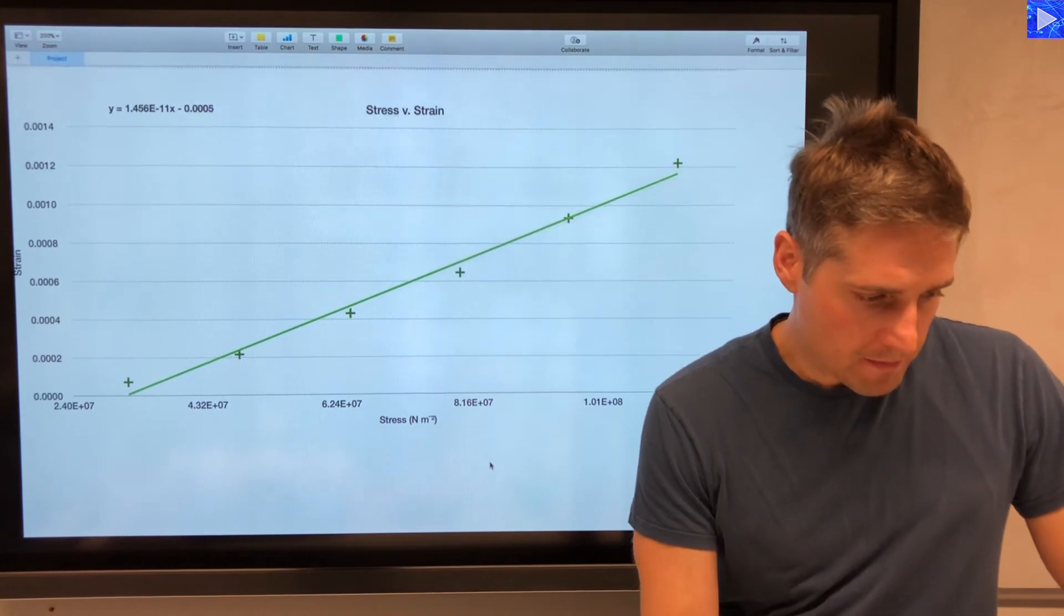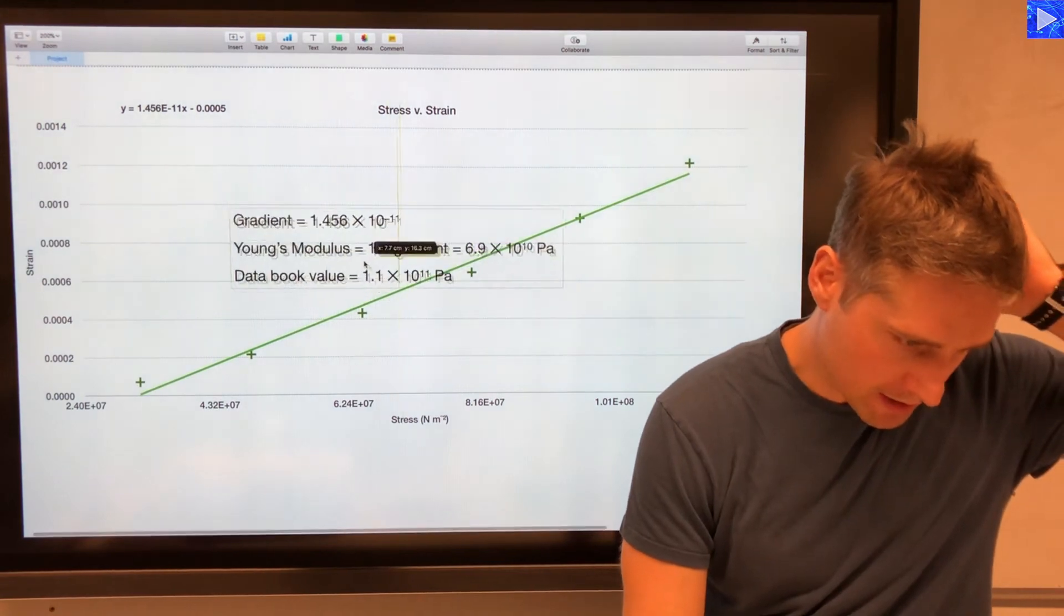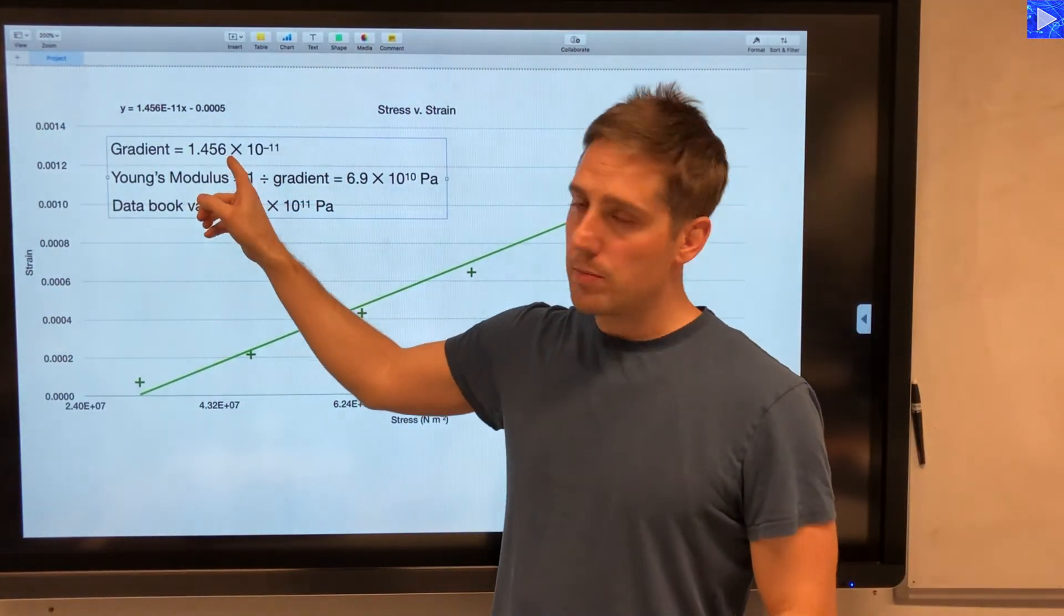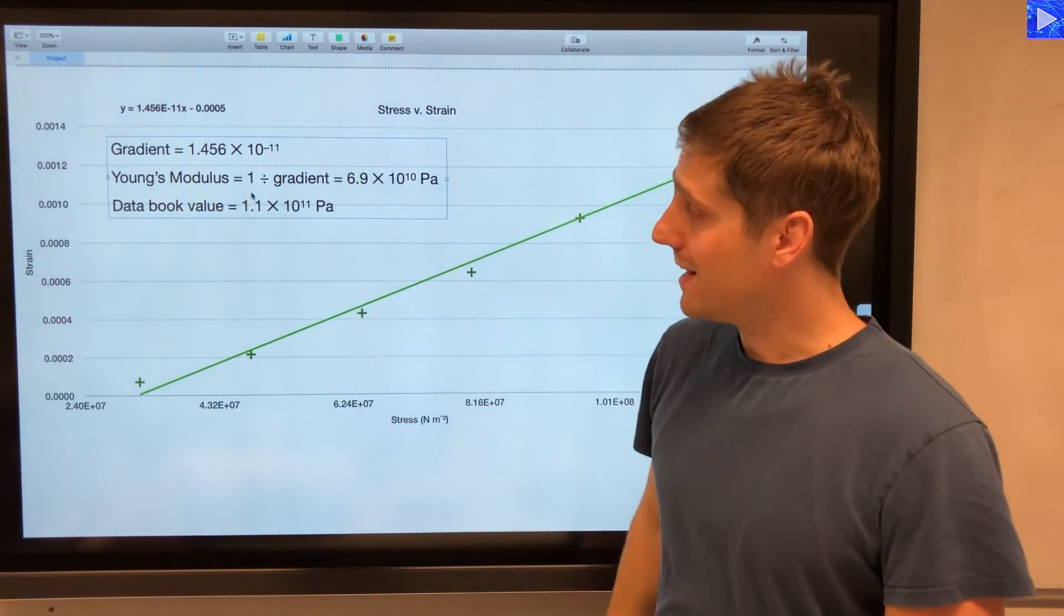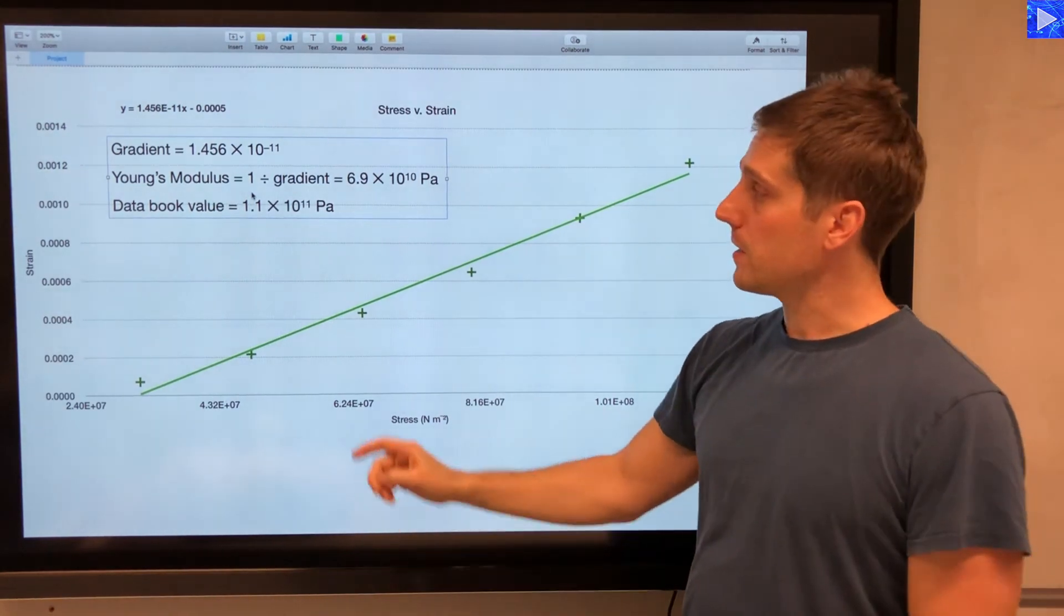So I've pre-calculated for this. So now if I bring in my calculation here. The gradient is 1.456 times 10 to the minus 11, like I just showed you from there. Young's modulus is 1 divided by the gradient.